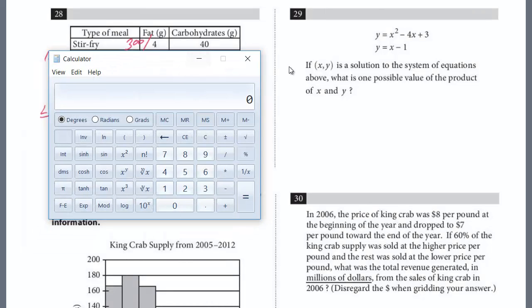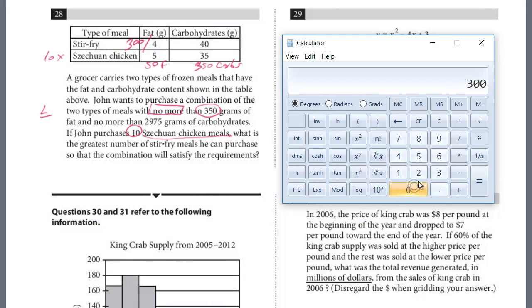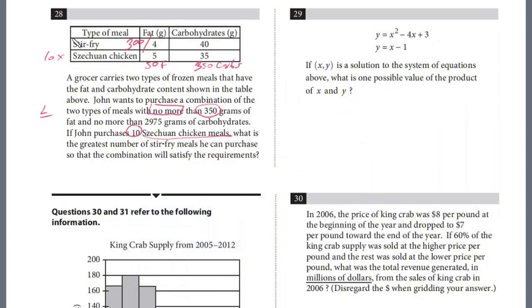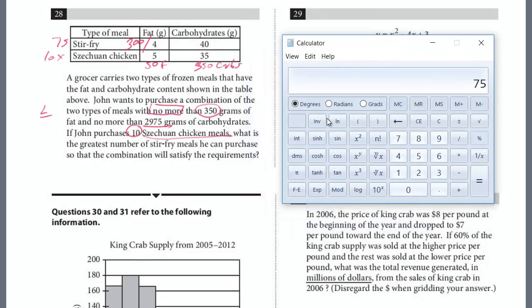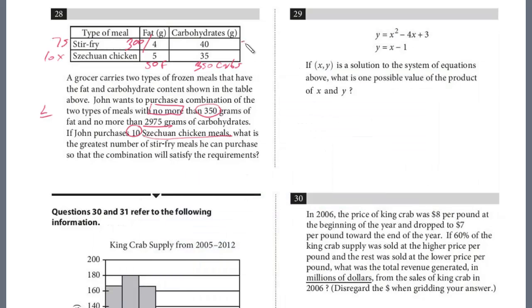So 300 divided by 4, that means he could purchase exactly 75 stir-fry. But we're not done because we have another constraint. If either constraint is violated, then we have to use that value. We don't know if it's 75 yet, we're going to check with carbs. Now, we already had 350 carbs, and the total is 2975. So what's left, 2975 minus the 350, this is how many grams of carbs that he can still buy. So it's 2625. And remember, the stir-fry has 40, so we're going to divide this by 40.